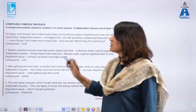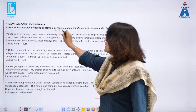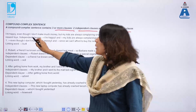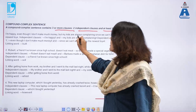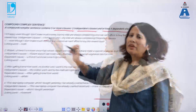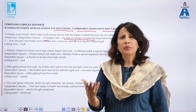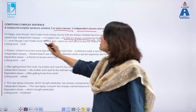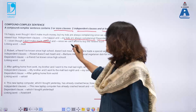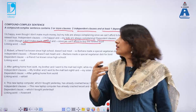A compound complex sentence contains three or more clauses — two independent clauses and at least one dependent clause. For example: 'I am happy even though I don't make much money, but my kids are always complaining since we cannot afford to buy the newest toys.' The independent clauses are 'I am happy' and 'my kids are always complaining.' The dependent clauses are 'even though I don't make much money' and 'since we cannot afford to buy the newest toys,' both beginning with subordinating words.